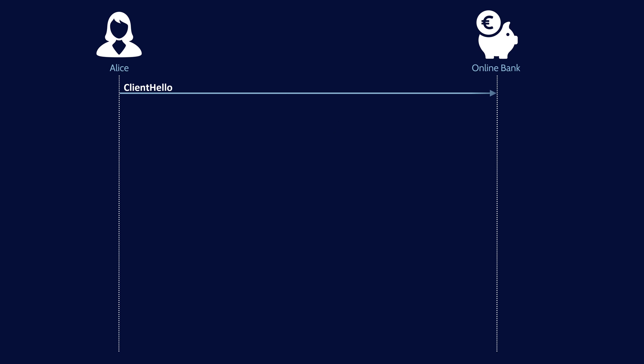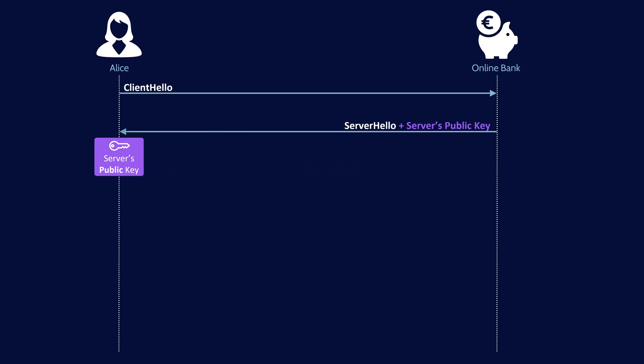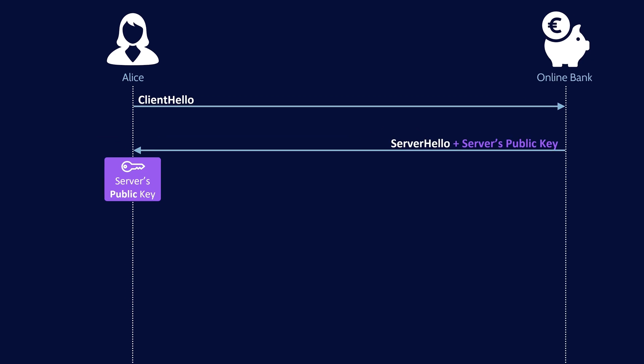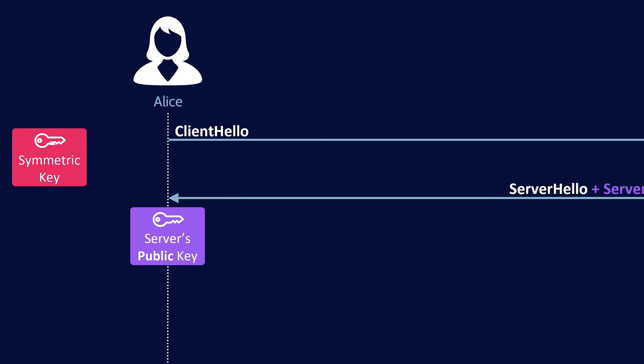The server replies with a server hello message and includes a copy of the server's asymmetric public key. Alice's browser receives the server's public key. Alice's browser actually generates a symmetric session key used for encrypting communication with the server. But now we have the big problem of symmetric key distribution.